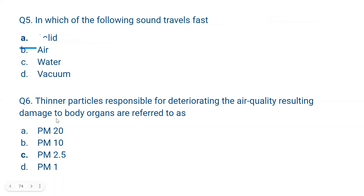Question number 5. In which medium does sound travel fastest? Sound travels fastest in a solid medium and slowest in air; it does not travel in a vacuum at all. So the order is: fastest in solid, then water, then air, and sound cannot travel in vacuum.